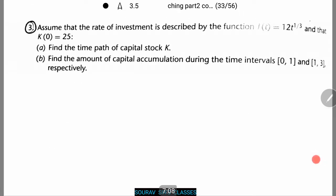Then let's do a sum which is not simple at all, but it's easy to do. Don't worry. Over here we assume that the rate of investment is described by the function I(t) equals 12t to the power 1 by 3 and that K(0) equals 25. Now we need to find the time path of capital stock K. How to do this?